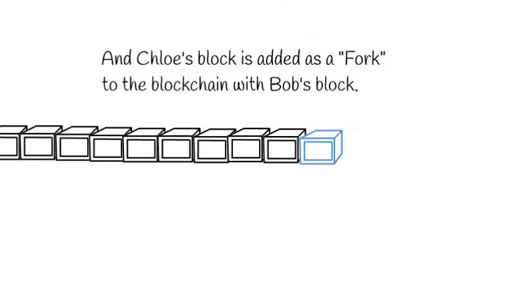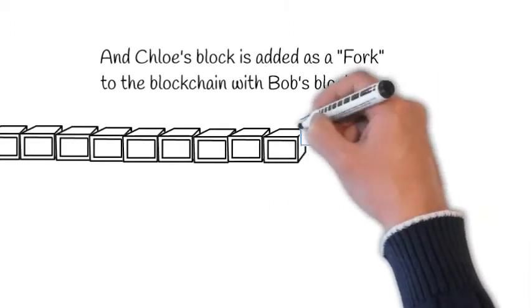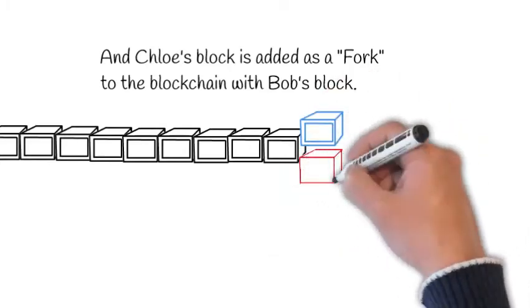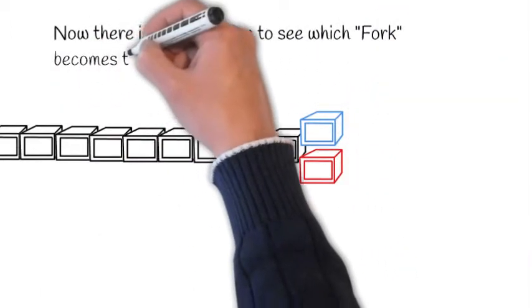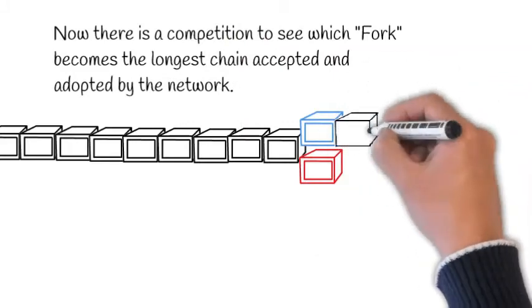And Chloe's block will be added as a fork to the blockchain with Bob's block. Effectively, there are now two paths to the blockchain, and there is a competition to see which fork becomes the longest chain accepted and adopted by the network.